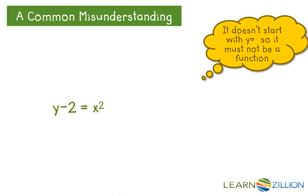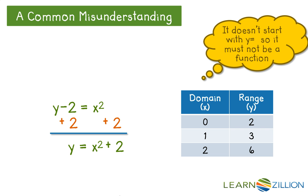For example, if you're given y minus 2 equals x squared, you might look at this and think this isn't a function because it doesn't start with y equals. But if you were to rearrange the equation into what we're familiar with, you'll see that I can create a function in the format we're used to seeing. Also, if I input domain values into y minus 2 equals x squared, you'll see that for each domain value, I only get one range value, which makes it a function.